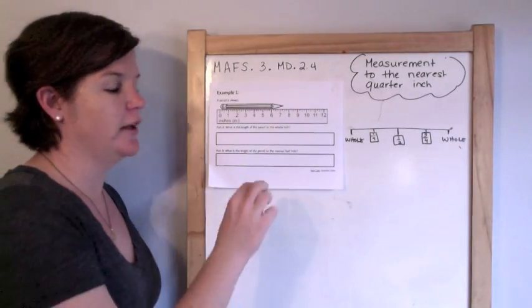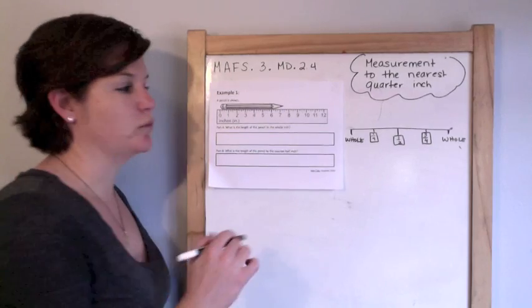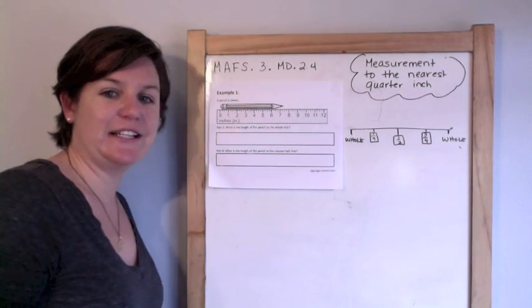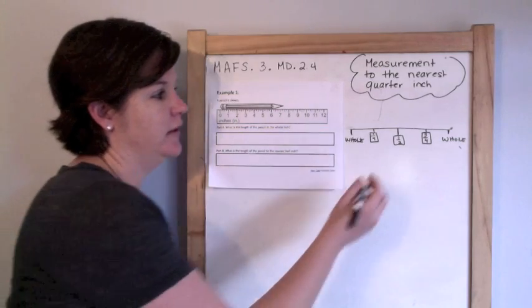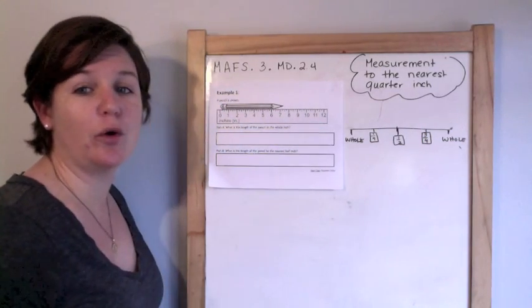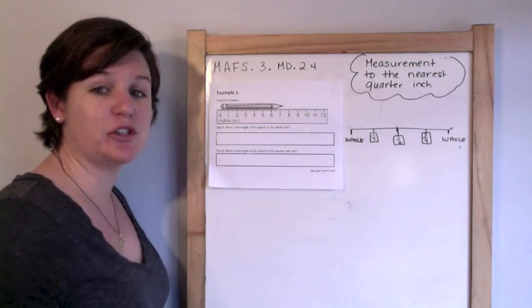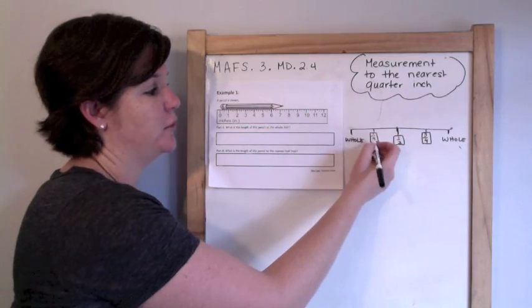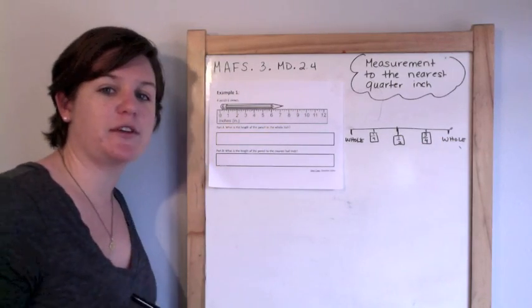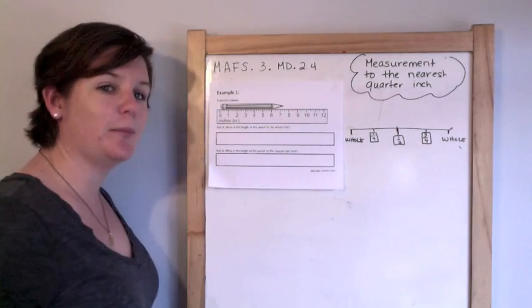But in the inch ruler there are one, two, three little tick marks. There's a little bit of a longer one that would represent halfway between the whole, which would be half an inch, and then a fourth of the way would be one fourth and then three fourths of the way would be three fourths of an inch. So we'll be using this to help us today.